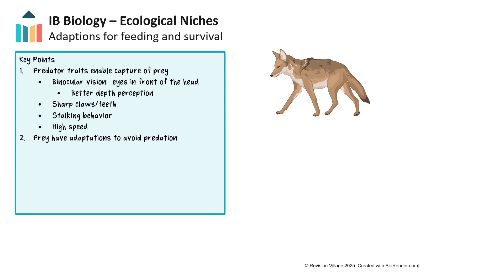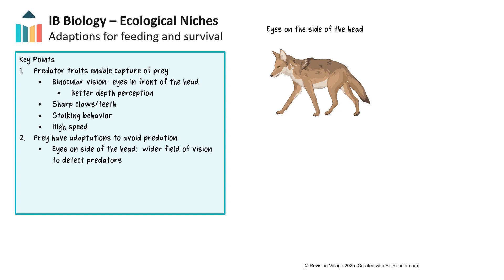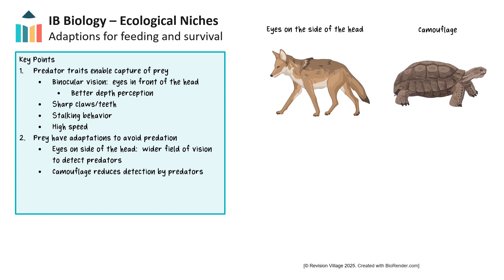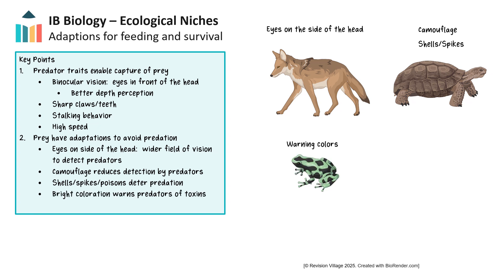Prey have various adaptations that help them avoid predation. Their eyes are generally located on the sides of their heads, providing a broad field of vision adapted to detect quick movements and alert them to approaching predators, although this reduces depth perception. Protective features like camouflage reduce detection by predators, while physical defenses such as shells, spikes, or poisons deter predation attempts. Poisonous species often develop bright coloration to warn predators of their toxic nature. Other prey species may exhibit mimicry by displaying similar markings to poisonous species despite lacking actual toxicity.